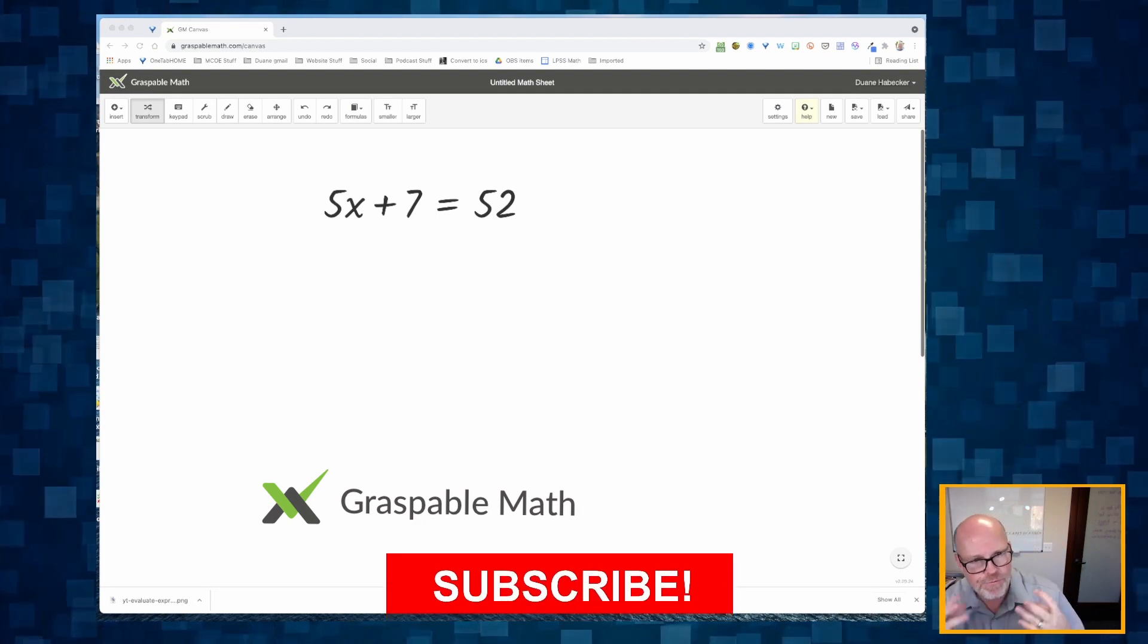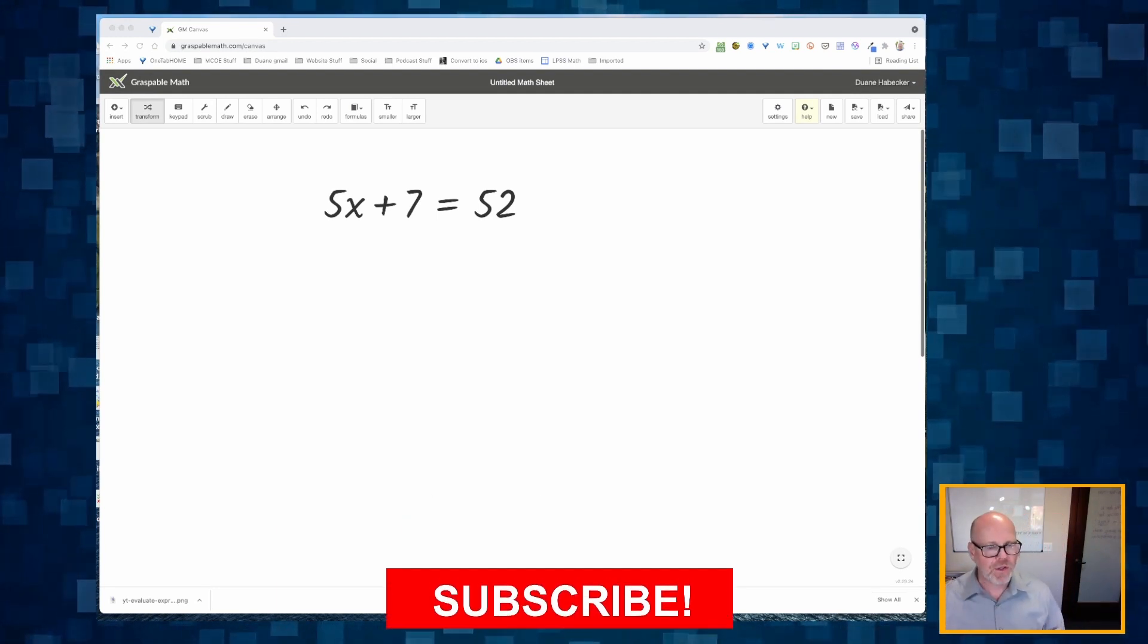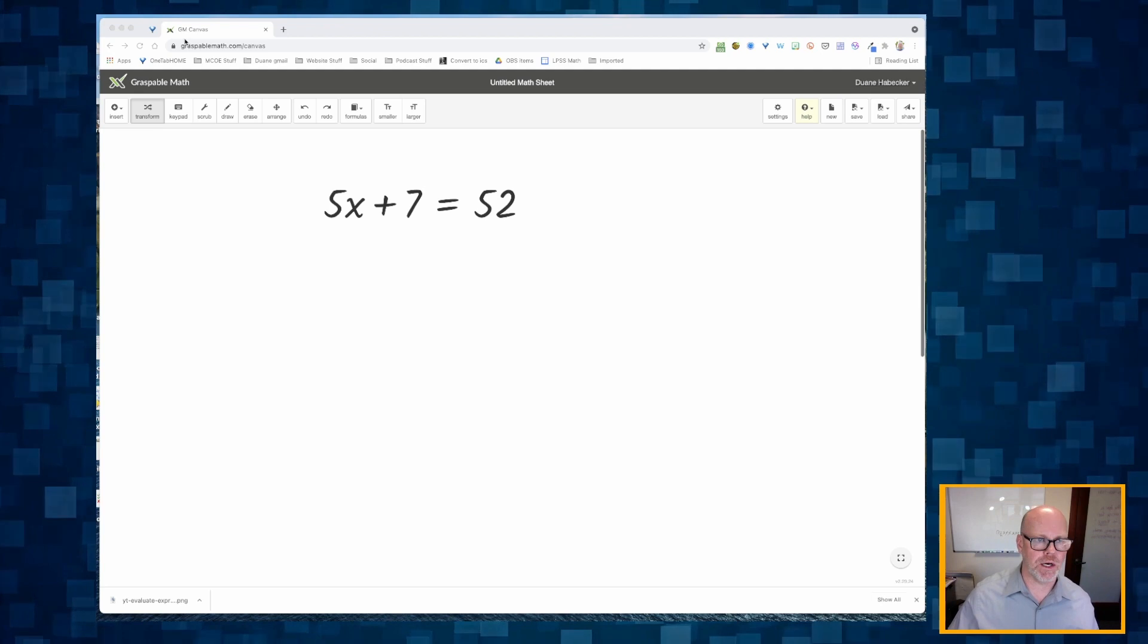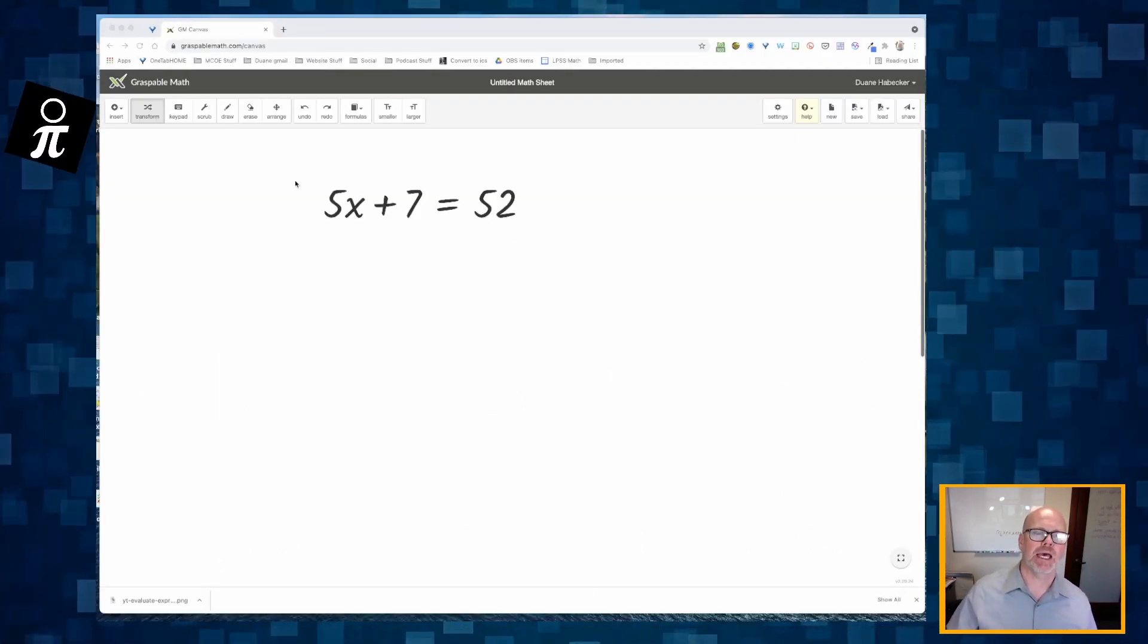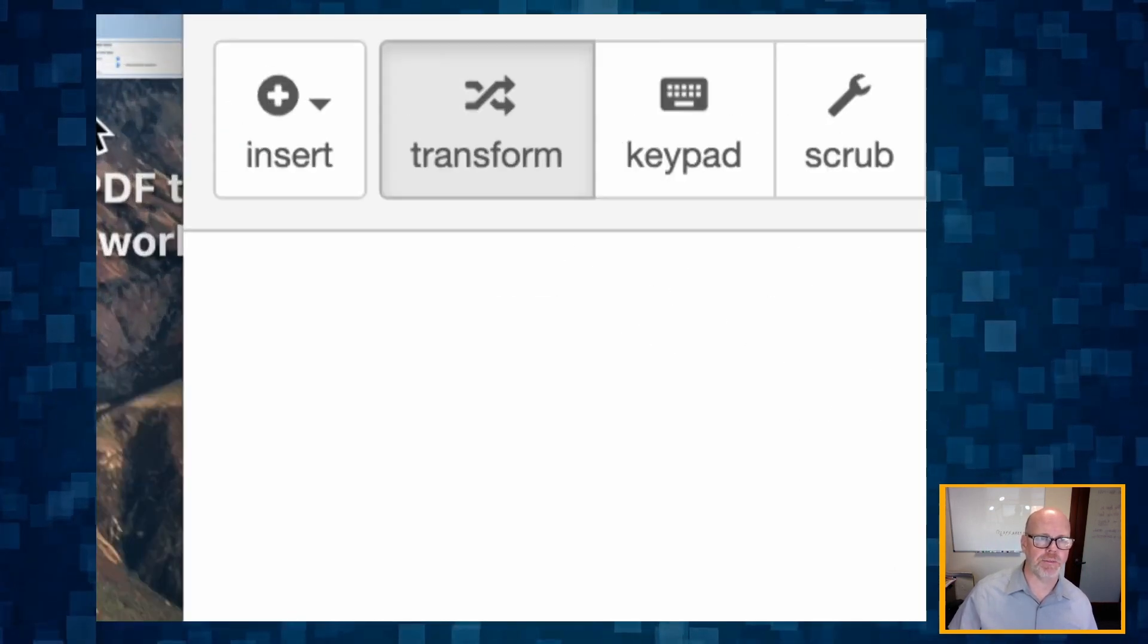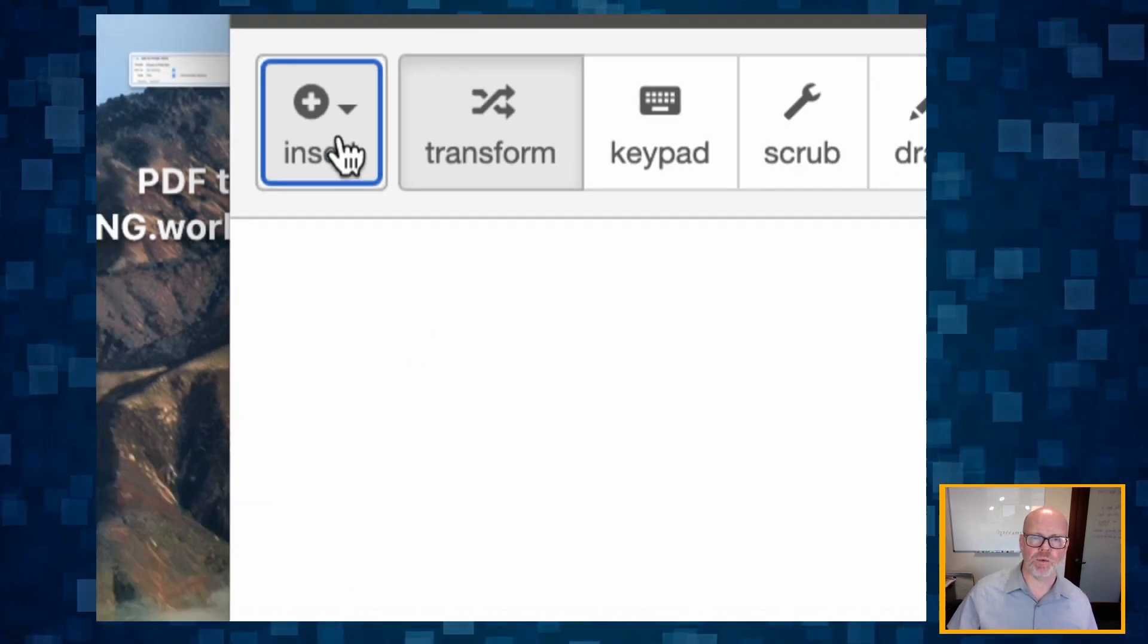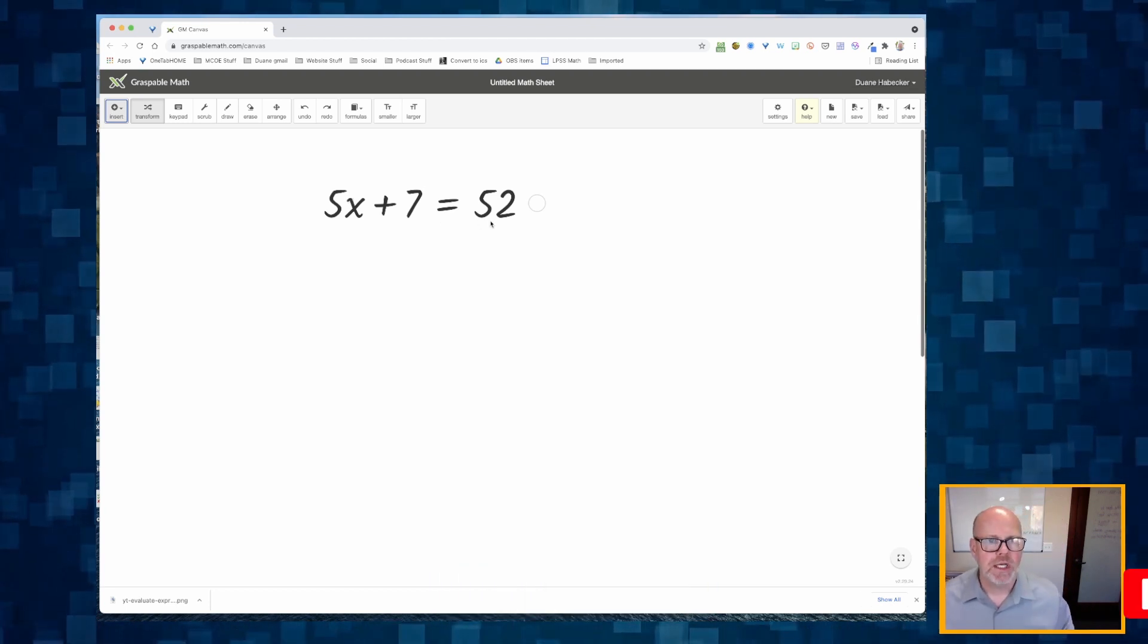So we've got this equation 5x plus 7 is equal to 52. We're trying to find the value of x that makes that 52 work. So we're in Graspable Math. How do I know? Because way up here it says graspablemath.com and I've got my equation. How did I get that equation? I just way up here in the upper left-hand corner, I clicked on insert equation and I typed in the expression that I wanted.